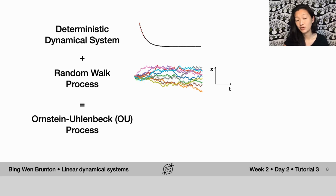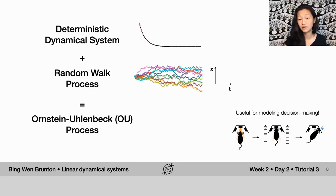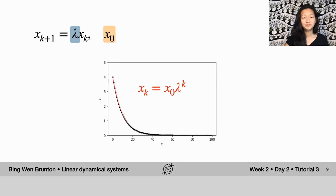This OU process is a really popular model for many things. Perhaps most relevantly in neuroscience, it has been useful for modeling decision-making in short-term memory. And so that's something that will be gone into in a subsequent day in this week.